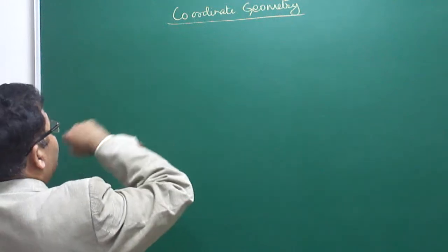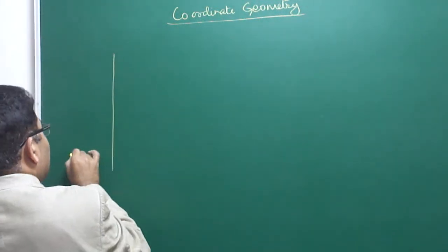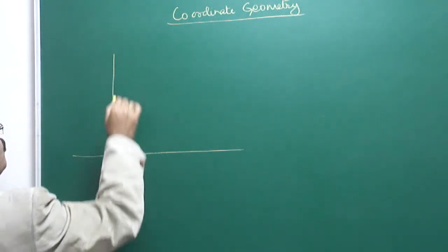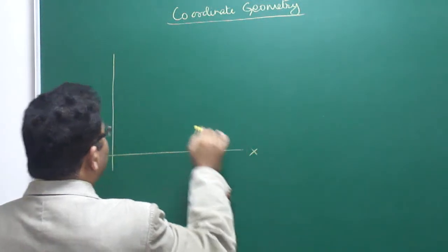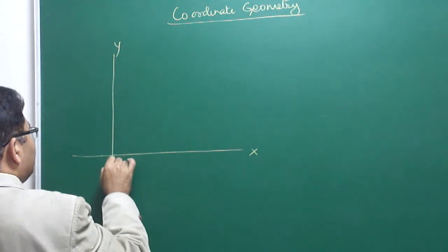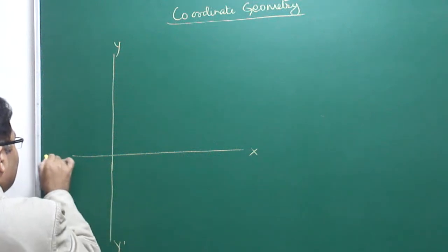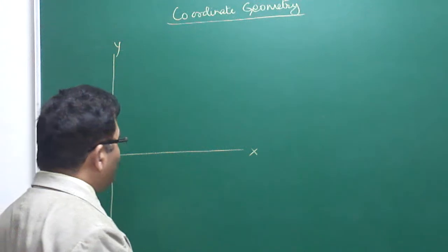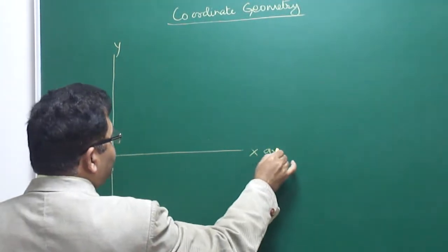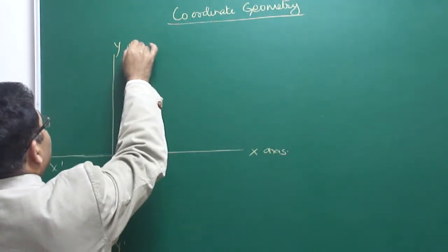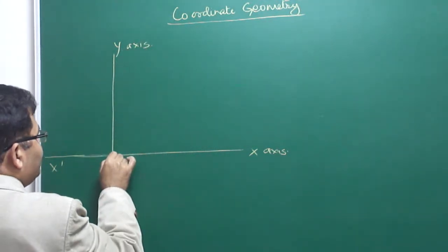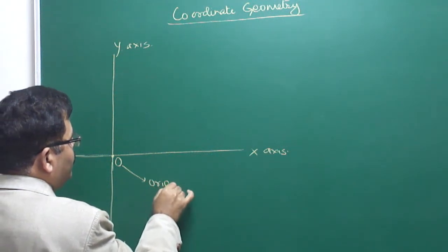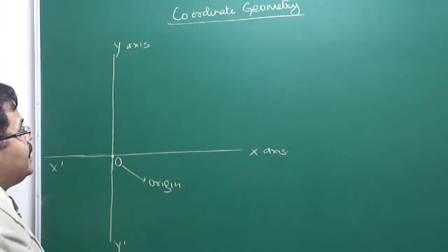In the Cartesian system, the coordinate of any point can be determined from the distance measured from two perpendicular axes. This is called the X-axis and this is called the Y-axis, and then there is Y-dash and X-dash. These two perpendicular lines are called the X-axis and Y-axis, and the point of intersection of these axes is called the origin.